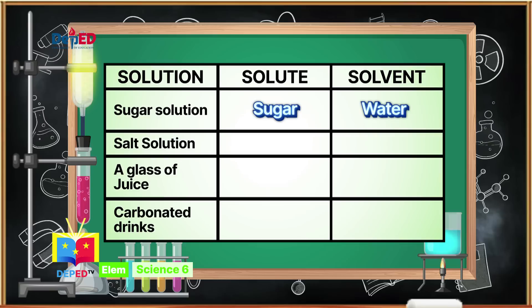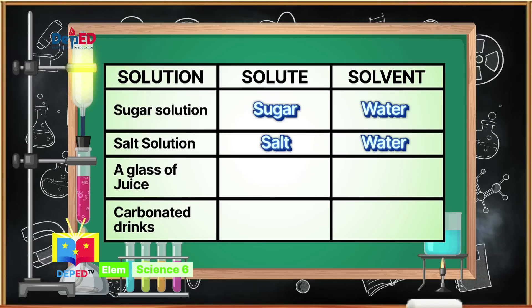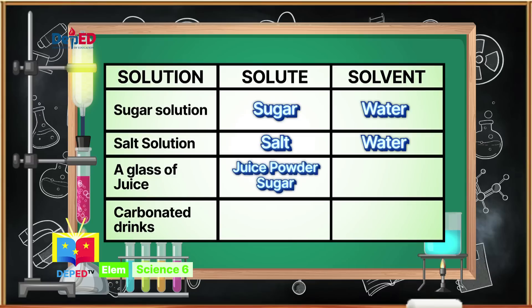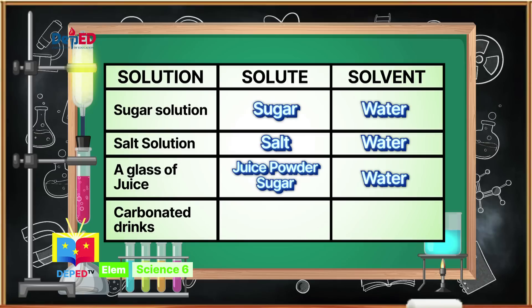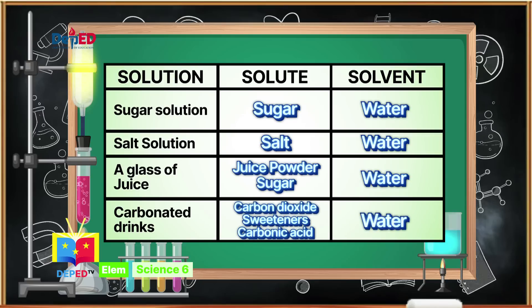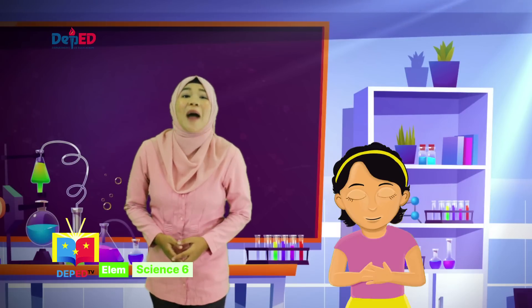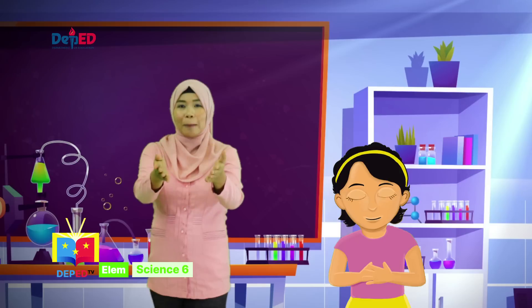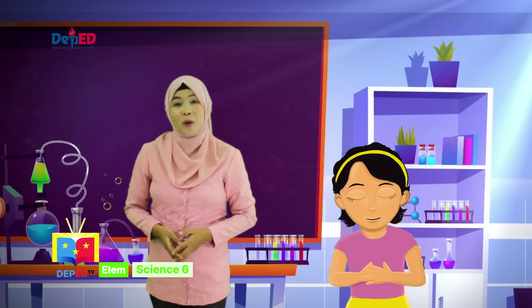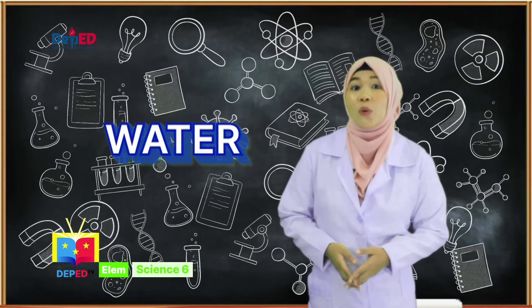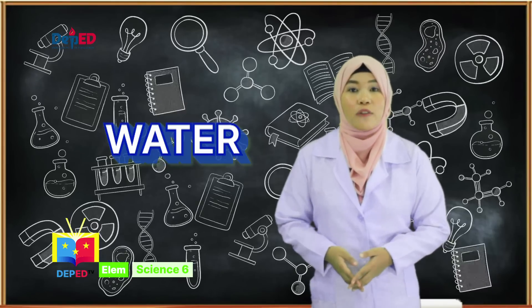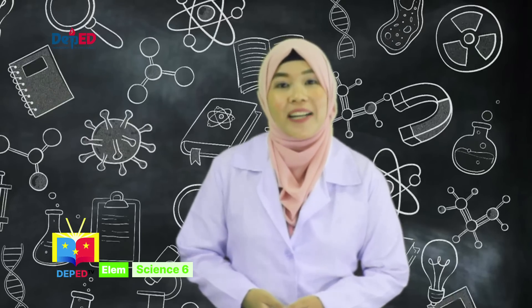In the glass of juice, juice powder and sugar are the solutes and water is the solvent. In carbonated drinks, carbon dioxide, sweeteners, and carbonic acid are the solutes, and water is the solvent. CC is so happy because she's done with her assignment. Take note that water is not the only solvent in the world — there are many solvents that can dissolve substances. Also, a solvent is usually a liquid but can also be a solid or a gas.